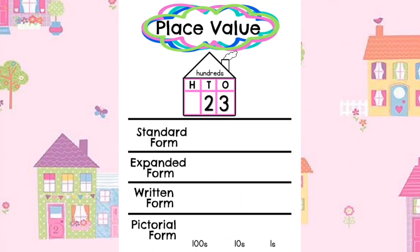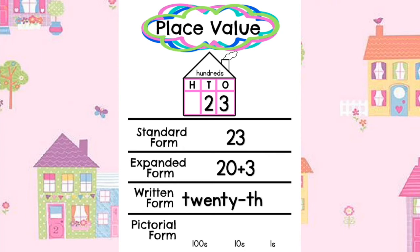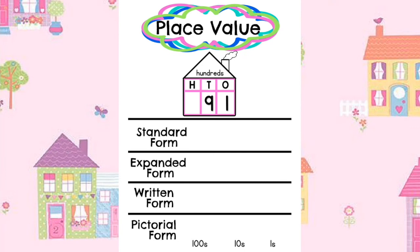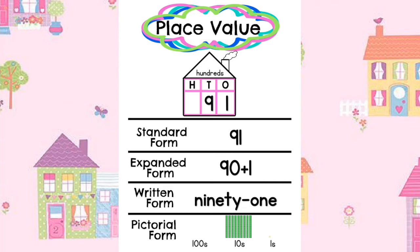Here is the number 23 in standard form. In expanded form the number is written as 20 plus 3. Here is the number 91 in standard form. In expanded form the number is written as 90 plus 1. Here is the number 91 in written form. And in pictorial form we draw 9 tens and 1 one cube.